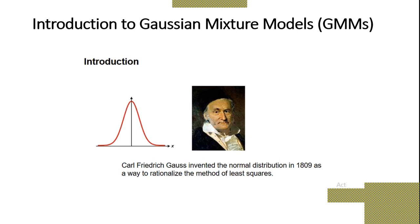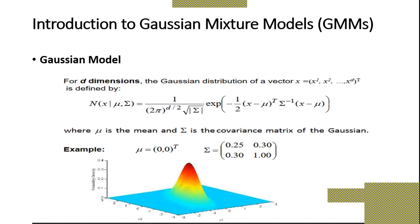The Gaussian Mixture Model was developed based on the work of Carl Friedrich Gauss, who invented the normal distribution in 1809 as a way of rationalizing the method of least squares. He is the inventor of this mathematics, Mr. Carl Friedrich Gauss. On the basis of his name, this model is called the Gaussian Mixture Model.